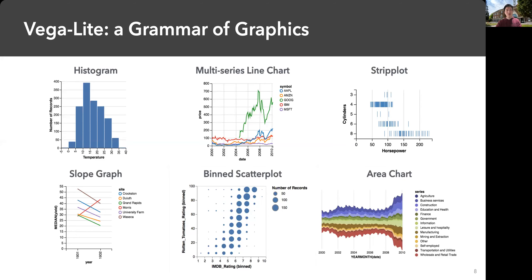These are some of the examples you can do in VEGA-Lite. Starting from the top left: the histogram, which we've seen before; next is a line chart where you can have multiple time series; and the last one on the top row is a strip plot — each data point is shown as a line segment instead of a dot. There are other examples you can easily do in VEGA-Lite as well.